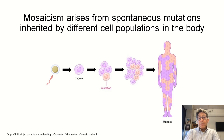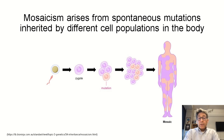A new mutation happens every time a cell divides, so we are really all mosaics for many individual mutations — some arising during embryonic development, some during childhood, and some during aging. The result is different cell populations with different genomes within an individual, a phenomenon termed genomic mosaicism.